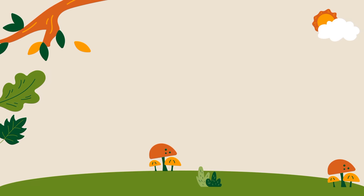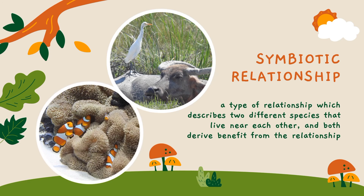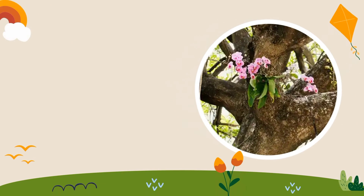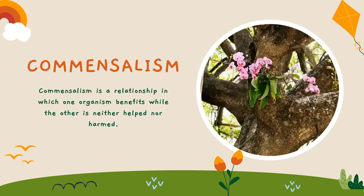Let us proceed with symbiotic relationship. When we say symbiotic relationship, it is a type of relationship which describes two different species that live near each other and both derive benefit from the relationship. One example of symbiotic relationship is commensalism. It is a relationship in which one organism benefits while the other is neither helped nor harmed. For example, orchids that grow on the bark of a tree — the tree gains no benefit but the orchids get shelter and space.